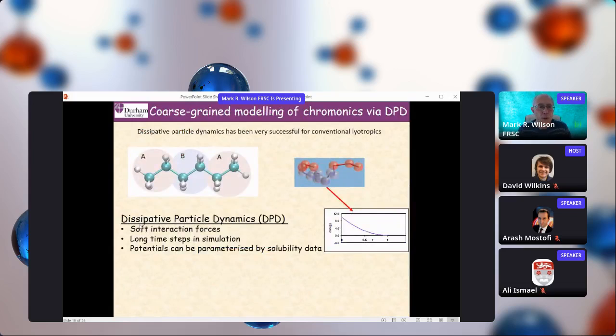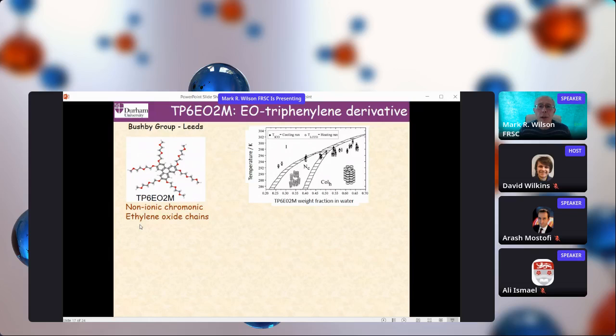I'm almost out of time. So I just want to show you one final thing before I finish. These systems also lend themselves very nicely to coarse graining through dissipative particle dynamics. That's the technique that's been very successful for conventional lyotropic systems. You use soft interaction potentials and very long time steps within a simulation. We can parameterize potentials based on solubility data and transfer free energies. That combination, along with the potentials of mean force that we have from atomistic simulation, allows us to simulate very large systems and explore entire phase diagrams. This is really powerful.